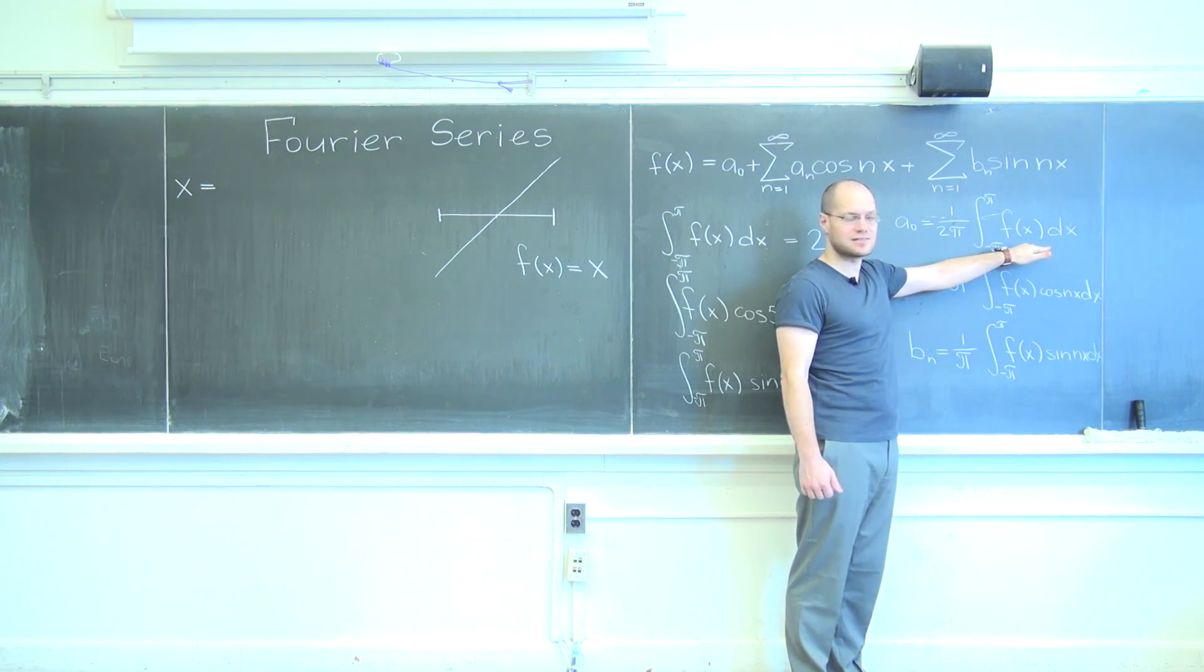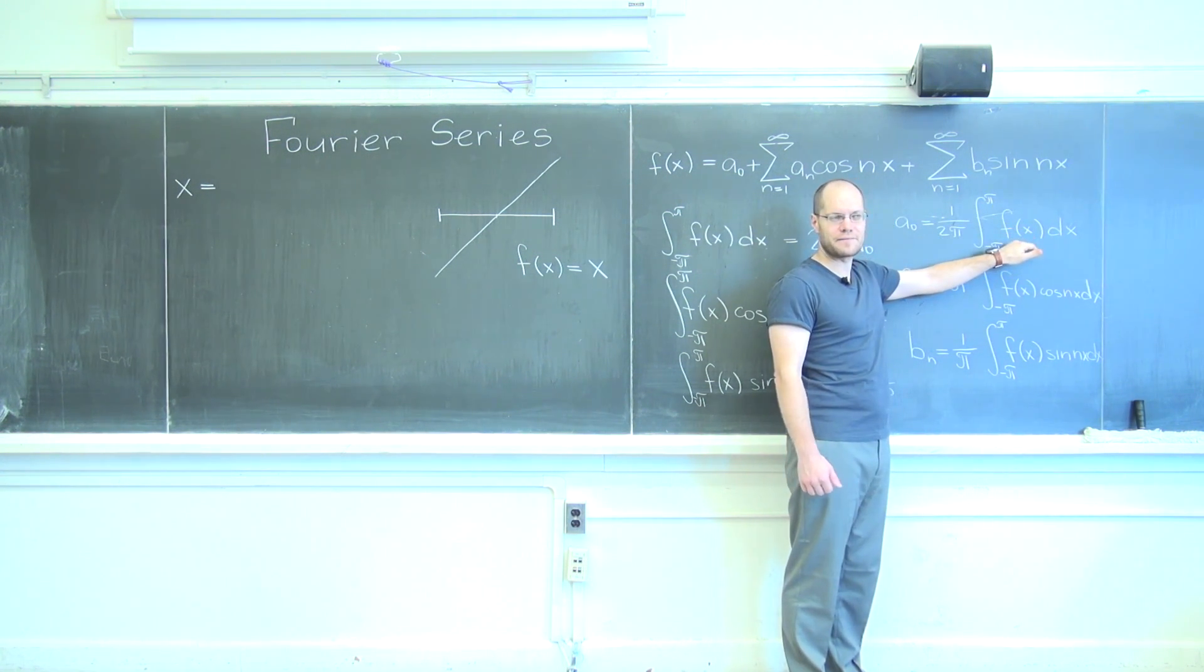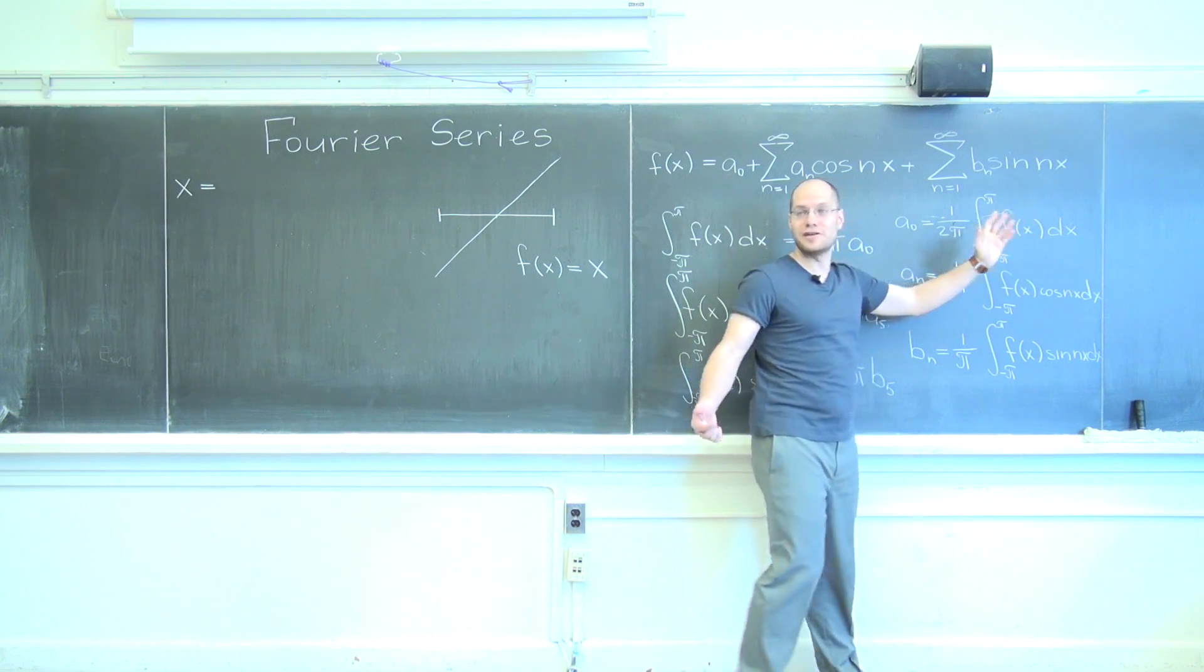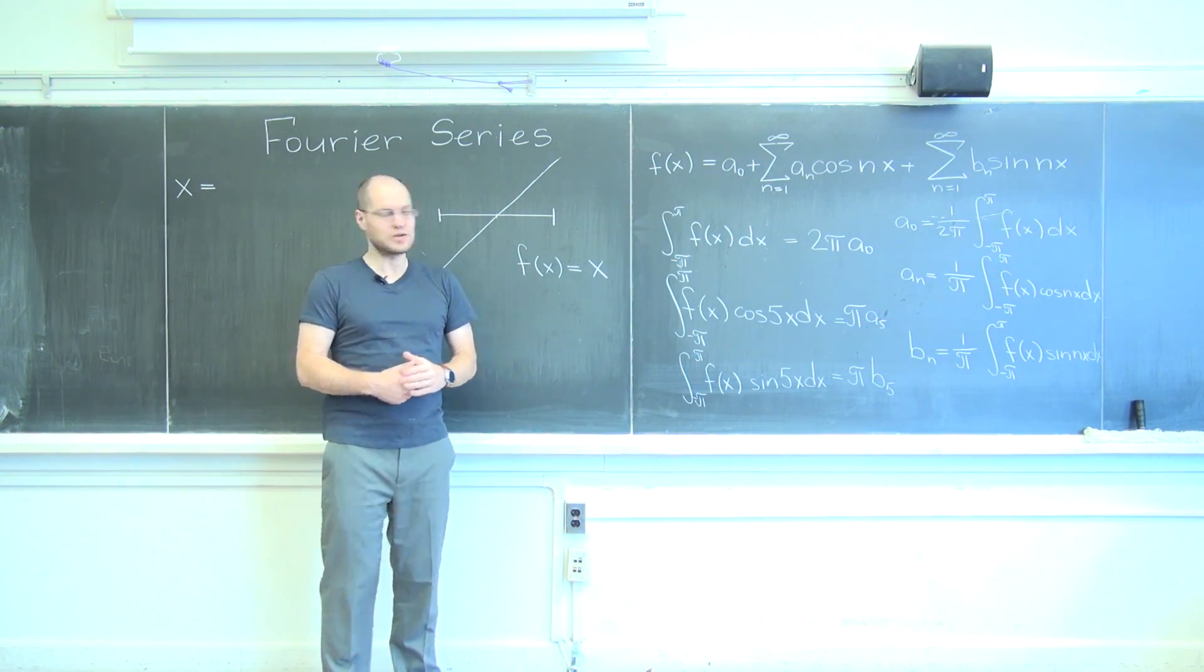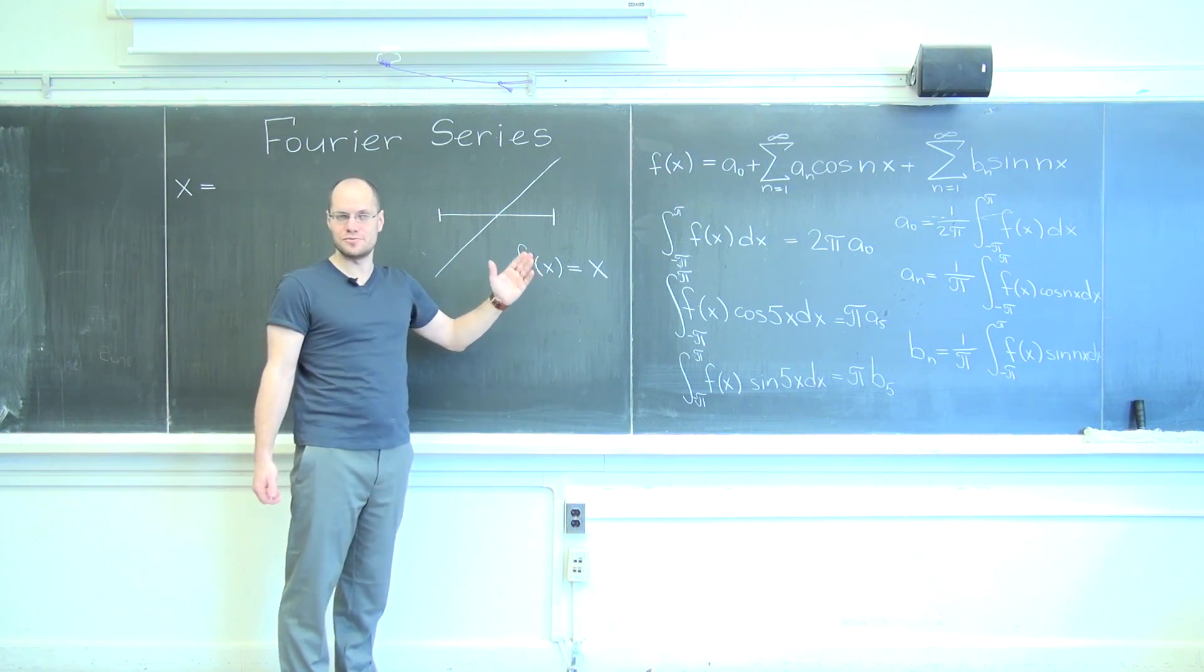So what is the integral of x from minus pi to pi? Zero, so we know that. There is no constant term because the average of this function is zero. Perfect.